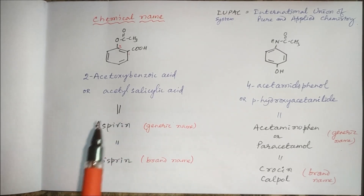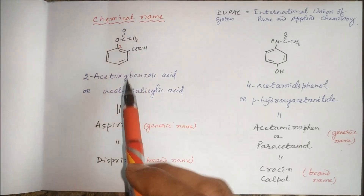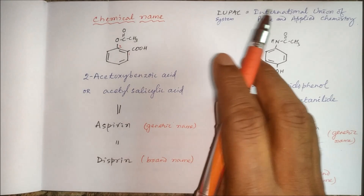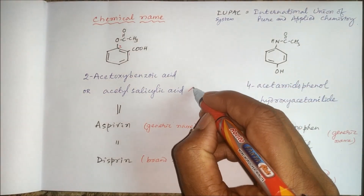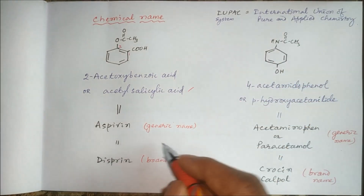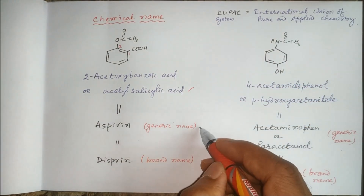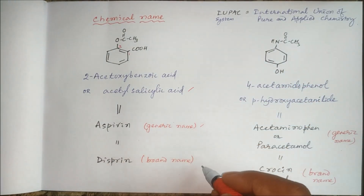So this is the difference: acetylsalicylic acid is the chemical name, aspirin is the generic name, and Dispirin is the brand name.